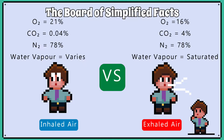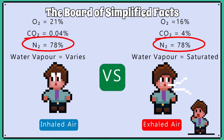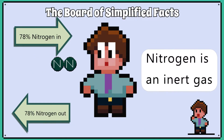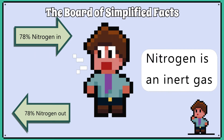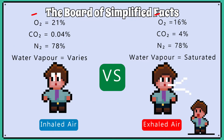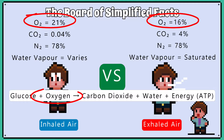The composition of exhaled air is as follows. Nitrogen doesn't change, so it's still 78%, because nitrogen is an inert gas and our body can't use it. Oxygen drops to 16% because the body has used up some oxygen for aerobic respiration.